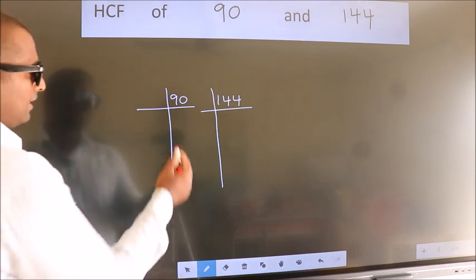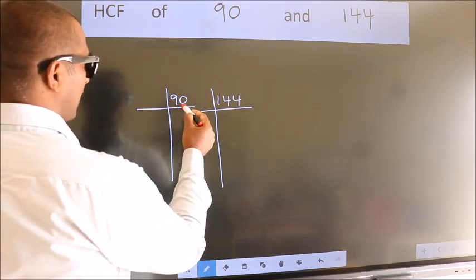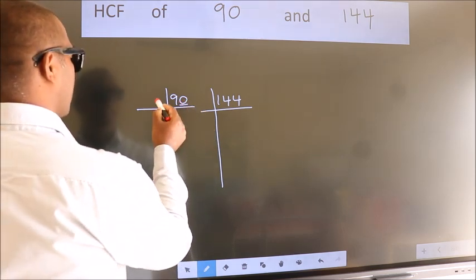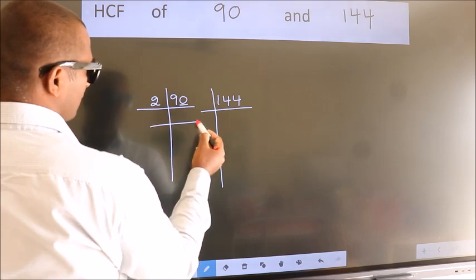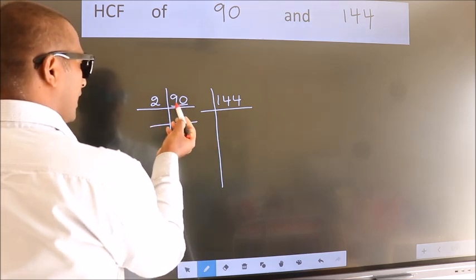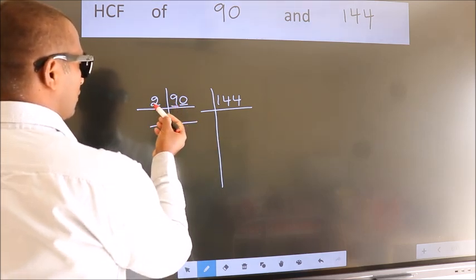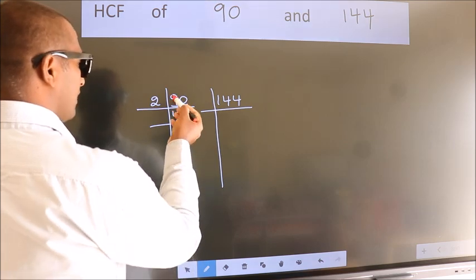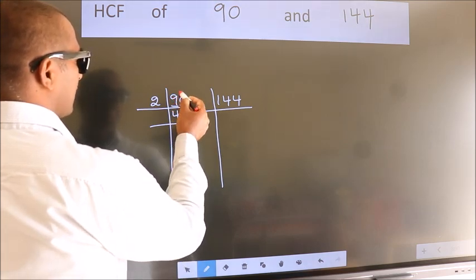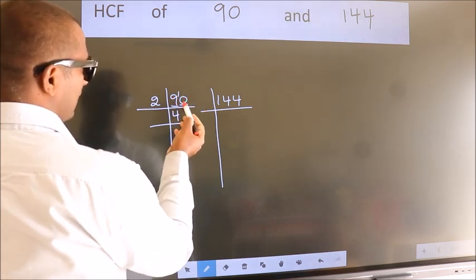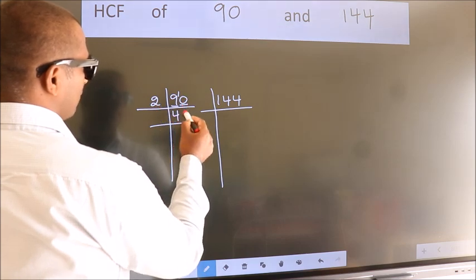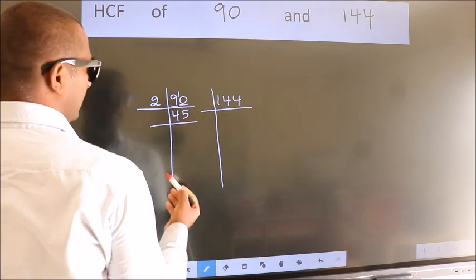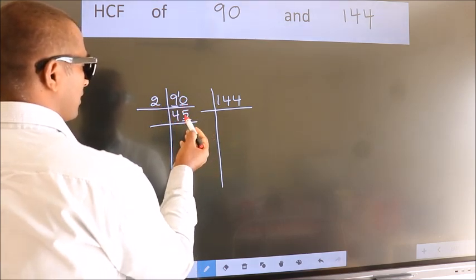Next, in this number, last digit is 0, so take 2. First number 9. A number close to 9 in 2 table is 2 fours 8. 9 minus 8, 1, 1 carried forward 10. When do we get 10 in 2 table? 2 fives 10.